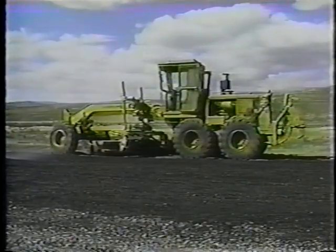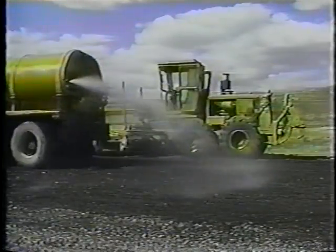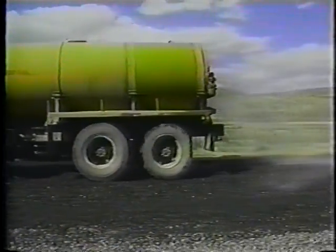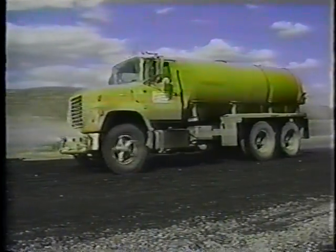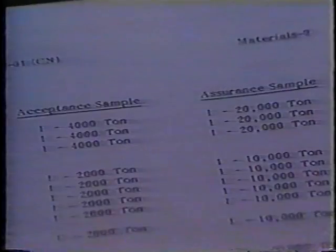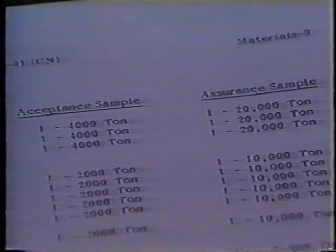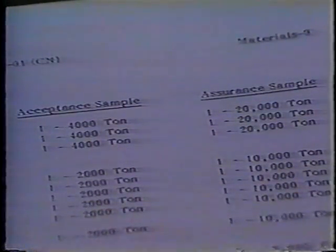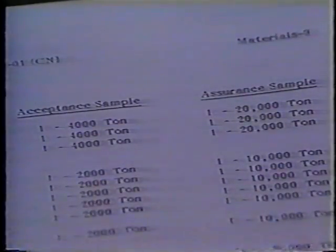Another preliminary concern before the work begins is approval of the contractor's equipment on the project. The equipment to be used depends in part on whether the operation will involve the central plant mix method or the road mix method. Both are described in the specs, but the road mix method is the one we'll look at here. Be sure to inspect the equipment according to the specification requirements — it should be in good condition and able to do the job properly. Look especially at the spreading equipment. During the job, you'll take both acceptance samples for field testing and assurance samples to send to the district lab according to the frequencies given in the Construction Manual. But before the work begins, you should notify the independent assurance samplers.